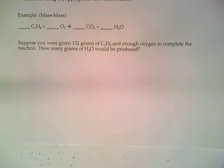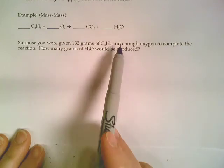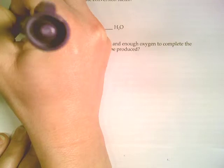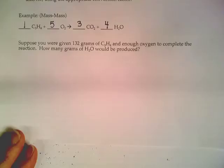For this first stoichiometry example, we have a reaction where C3H8, an organic combustion reaction, is going to form carbon dioxide and water. So the first thing we need to do is balance this. If we put a 1, a 5, a 3, and a 4, we can get that to balance.